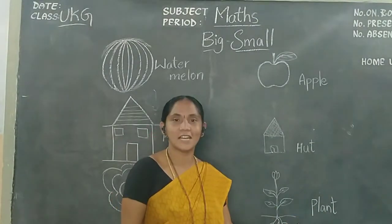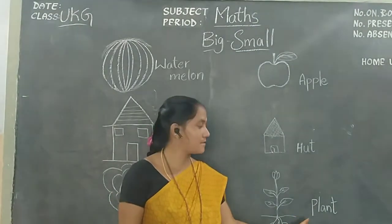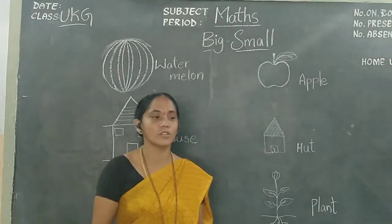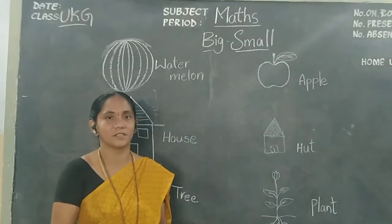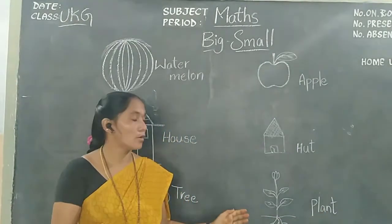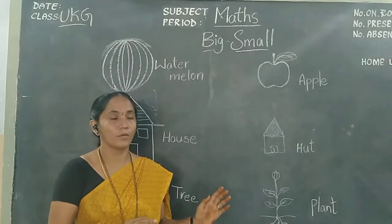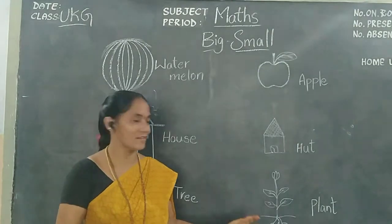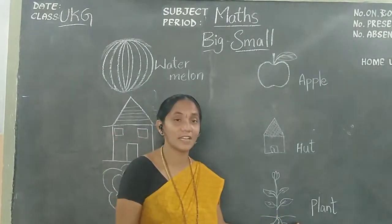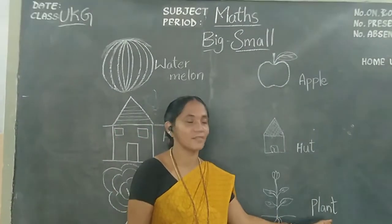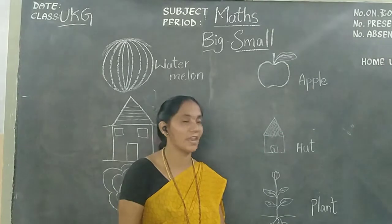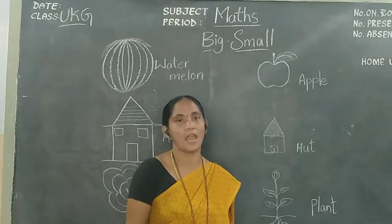What is this, children? This is a plant. In your house — plants, trees, gulabi, roses. Okay, children? You have plants that are very small. They look very small.